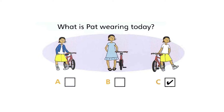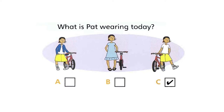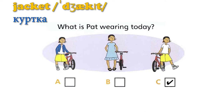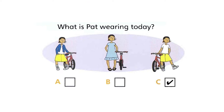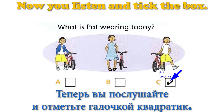What's Pat wearing today? Is Pat wearing her blue dress this morning? No, she's wearing a skirt today. And is she wearing a jacket? No, she isn't. Can you see the tick? Now you listen and tick the box.